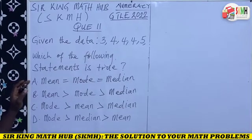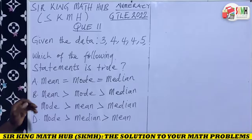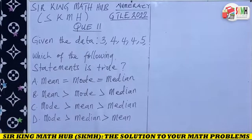We've been given statements A, B, C, and D. To determine which is true, we first need to calculate three values: the mean, the mode, and the median. Let's get started.